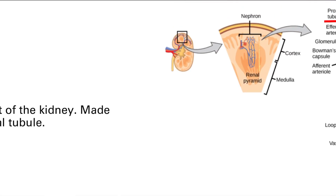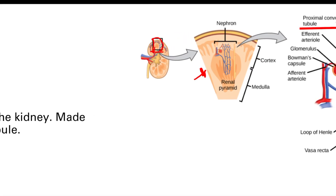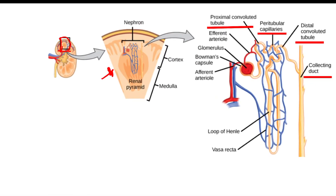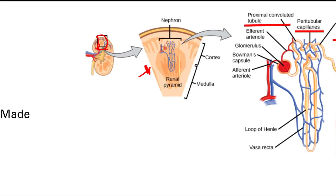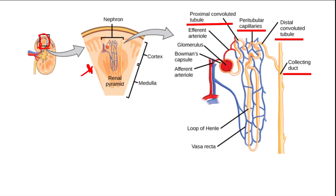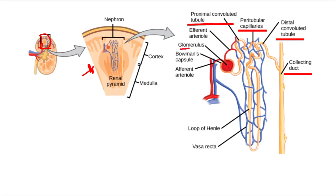So we look at this big kidney, we look at this tiny little slice, and we're going to see one little nephron. When expanded, the nephron has many different parts. It's made up of the glomerulus, which is here, and the rest of the renal tubules.